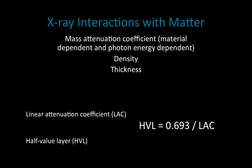For lead, because it has a high linear attenuation coefficient, I can use a thin amount of material to achieve the attenuation of the half value layer. To define it clearly: the half value layer is the amount of material required to attenuate 50% of my x-ray beam.